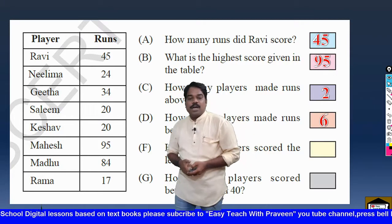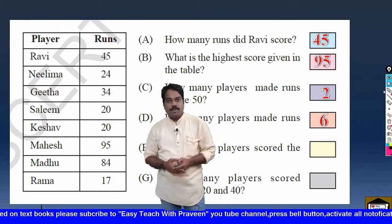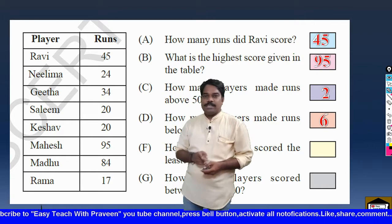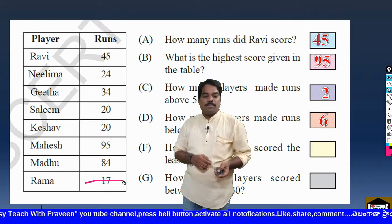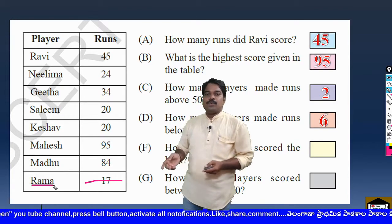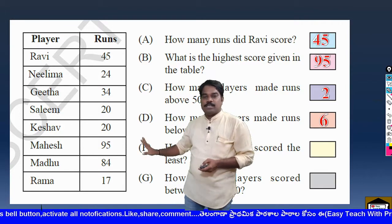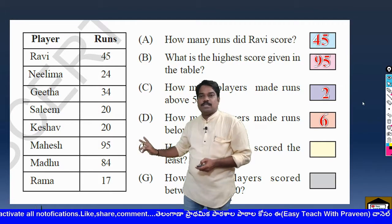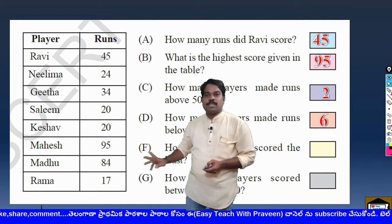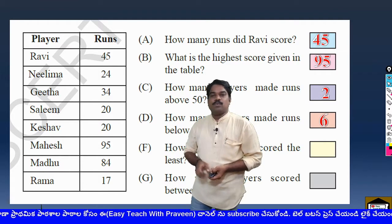Next question: How many players scored the least? The least score is 17 — only 1 person made 17 runs, that is Rama. This is the least score. The answer is 1.